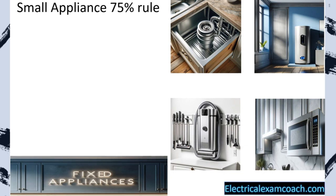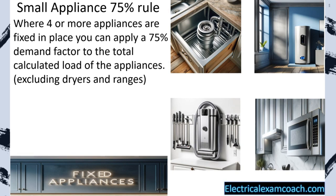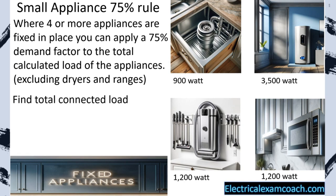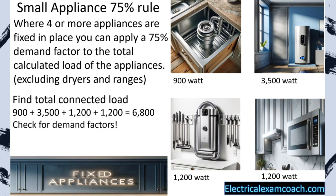The small appliance 75% rule works like this: where four or more appliances are fixed in place, you can apply a 75% demand factor to the total calculated load of the appliances. This excludes dryers and ranges — we'll calculate those separately. Let's imagine we have several appliances totaling 6,800 VAs. First, find the total connected load: 6,800. Then check for demand factors — we apply the 75% rule: 6,800 multiplied by 0.75 gives us a new reduced load of 5,100 watts, and that's what we add to our whole-home load calculation.